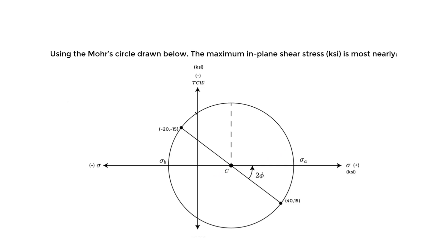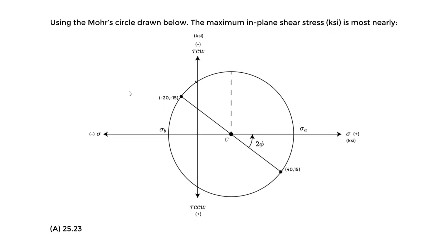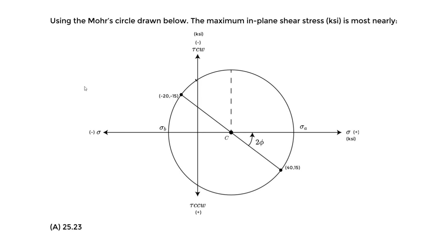Let's do an example using Mohr's circle to determine the maximum in-plane shear stress. We're told that using the Mohr's circle drawn below, the maximum in-plane shear stress in KSI is most nearly one of the given options. They give us a Mohr's circle where our original stress conditions are graphed, and we can see one point here and another point here.